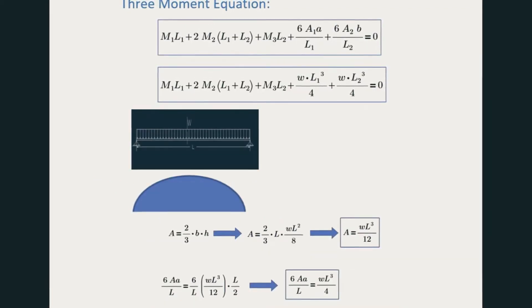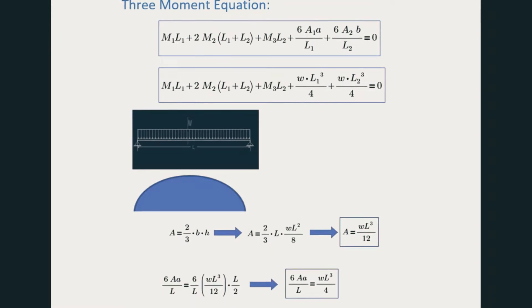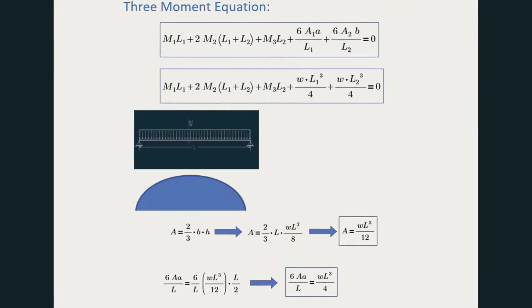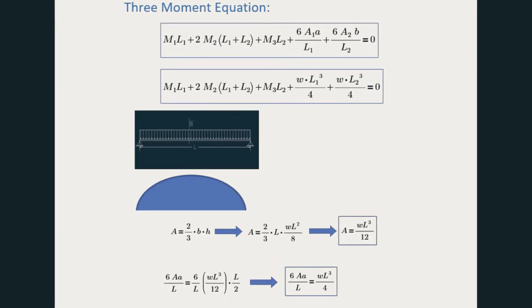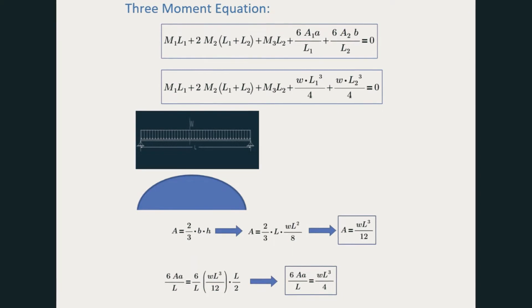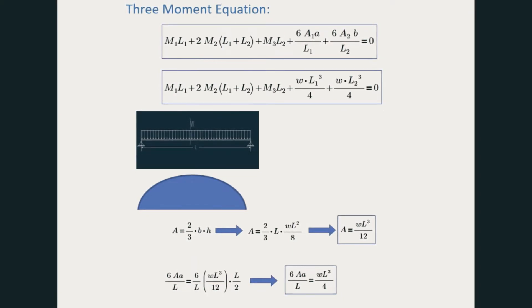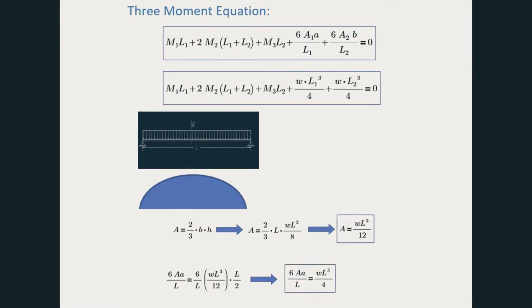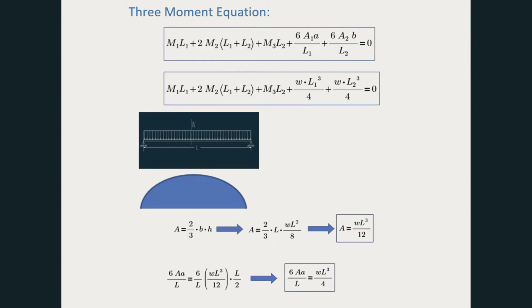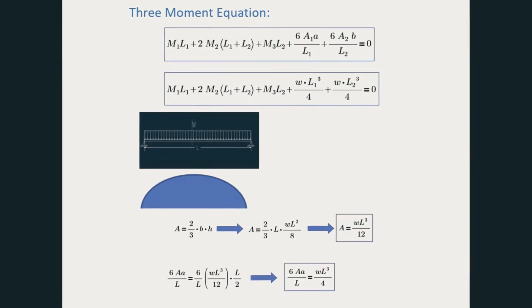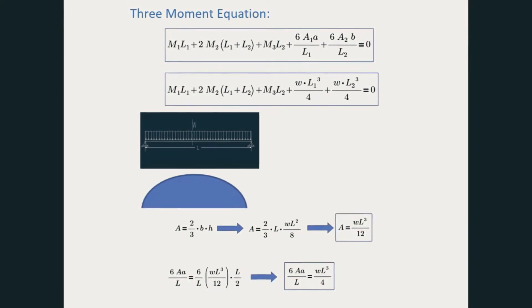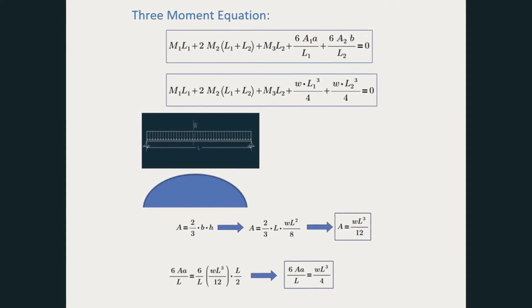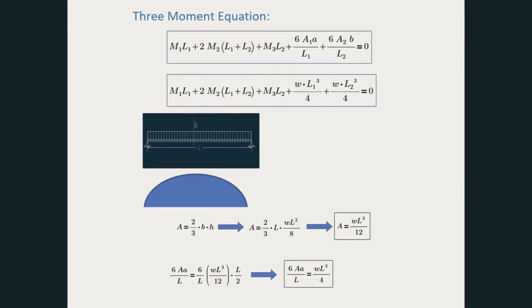This is how we derive WL³ over 4. A represents the area of the moment curve. For a uniformly distributed load, the moment curve is a parabola. The parabola area equals two-thirds times base times height, where B represents the span of the beam and H represents the maximum bending moment, which is WL² over 8 for a uniformly distributed load. So we get an area of WL³ over 12, and then multiplying by 6A over L gives us WL³ over 4.